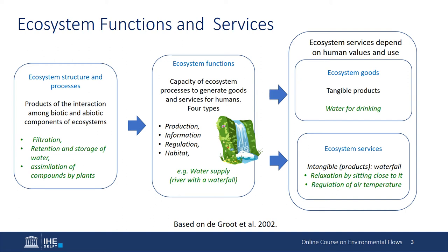The concept of ecosystem services has been used for decades by ecologists to describe how the function and structure of ecosystems determines the tangible and intangible services and goods that ecosystems provide for society. The ecosystem structure and processes result from the interaction among biotic and abiotic components of the ecosystem. This determines ecosystem functions, which refers to the capacity of ecosystem processes to generate goods and services for humans. When these services are used is when we refer to ecosystem services. The tangible services are often considered goods, while the intangible are considered services.